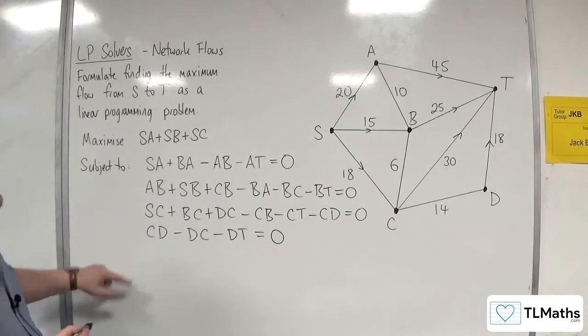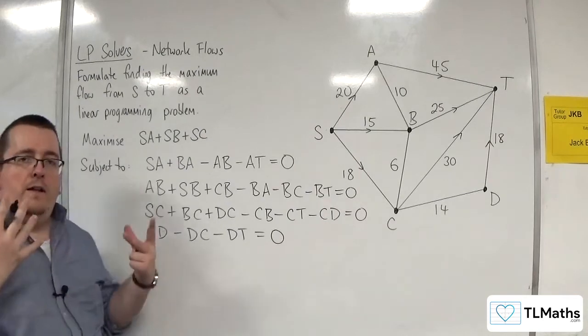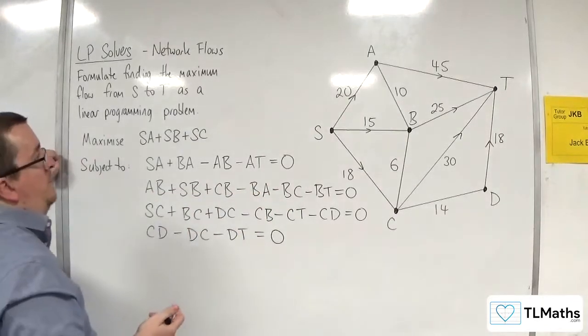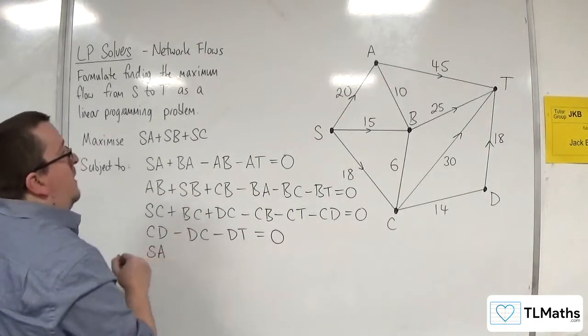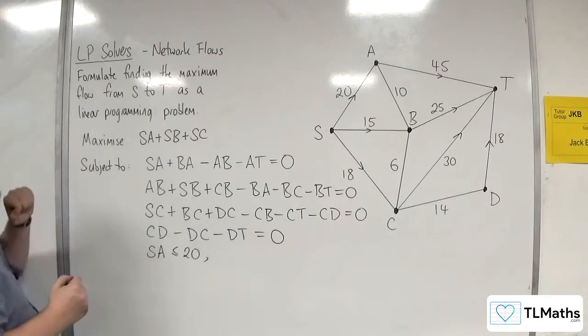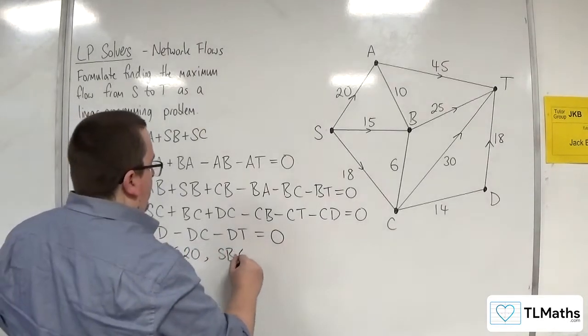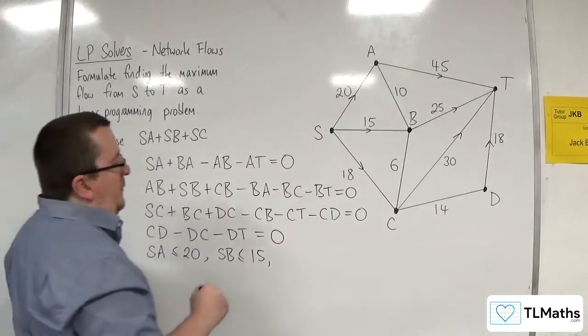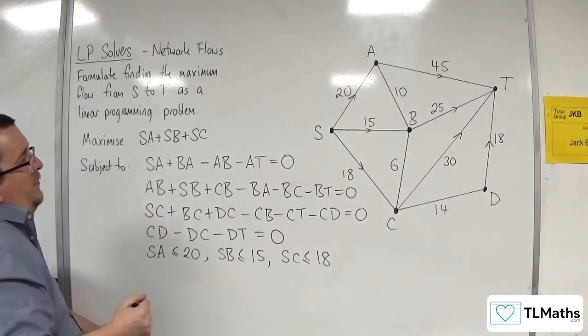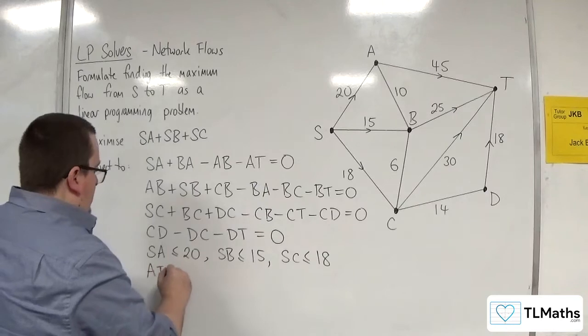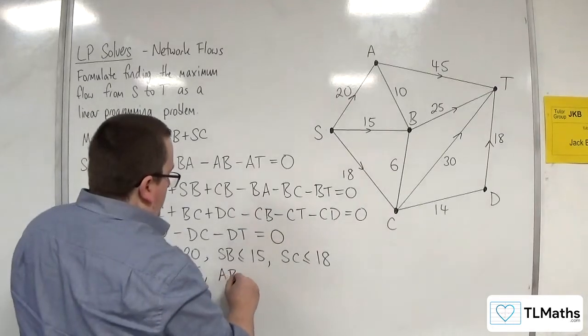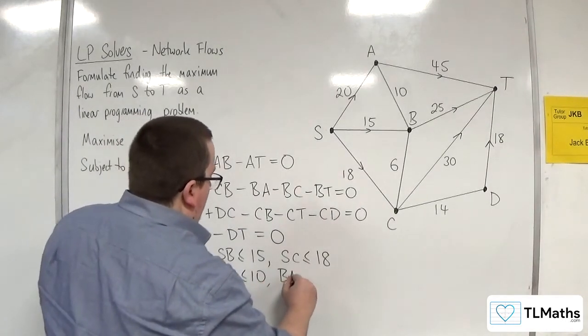And then we must have constraints that include the weights. So the capacities on the arcs. So SA must be less than or equal to 20. We must have SB less than or equal to 15. And SC is less than or equal to 18. Then we must have AT is less than or equal to 45. AB is less than or equal to 10. And BA is less than or equal to 10.